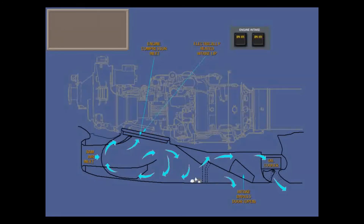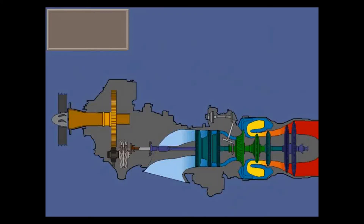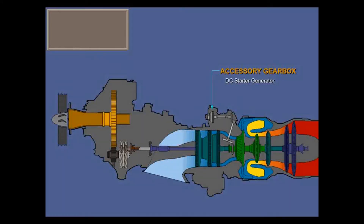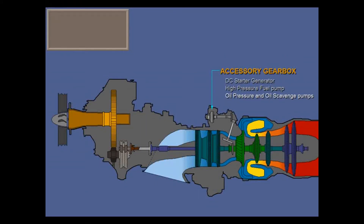Ram air is also used to cool engine oil. There are two main gearboxes attached to the engine: the accessory gearbox and the propeller reduction gearbox. Driven by the high pressure turbine through a shaft, the accessory gearbox contains the DC starter generator, used in starter mode to start the engine and in generator mode as the main source of DC power; the high pressure fuel pump, to supply fuel to the combustion chamber; the oil pressure and oil scavenge pumps, part of the engine oil system; and the permanent magnet alternator, PMA, used as the primary source of electrical power for the engine control system at NH speeds above 20%.